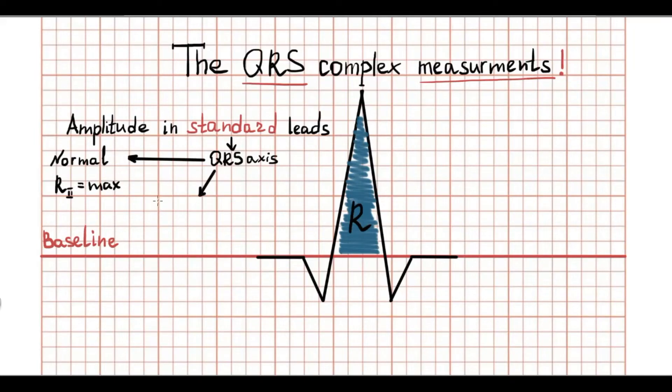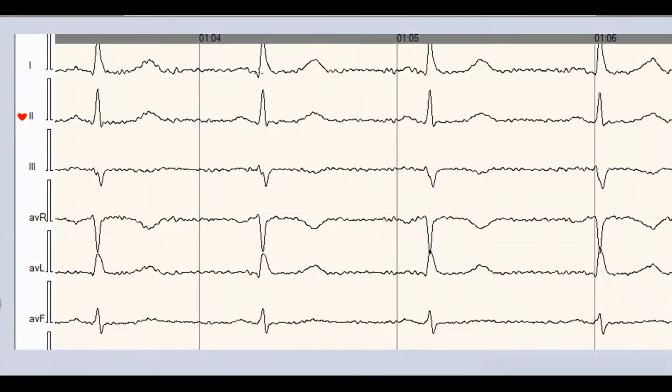On the contrary, in the case of horizontal electrical position of the heart, the maximal R wave is located in first standard lead, and first standard lead is represented by biphasic complex.